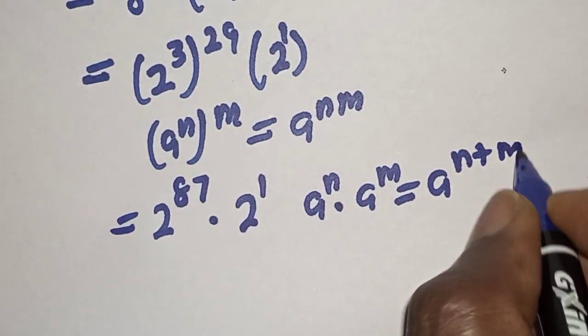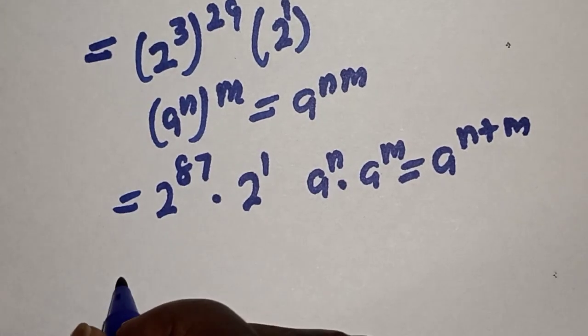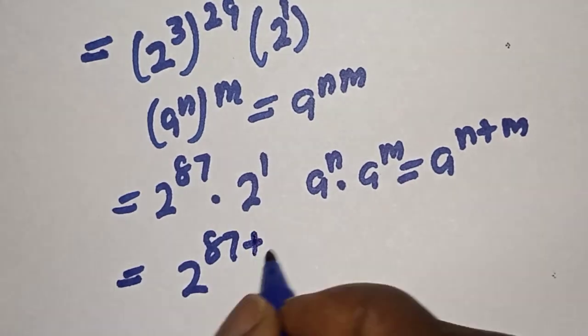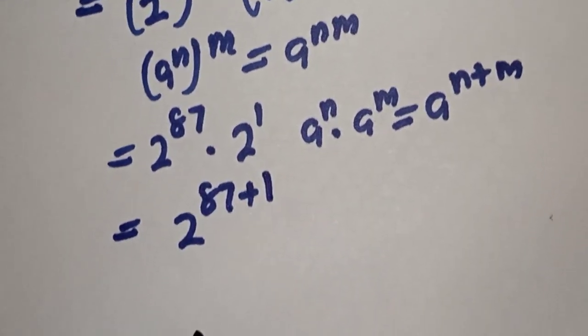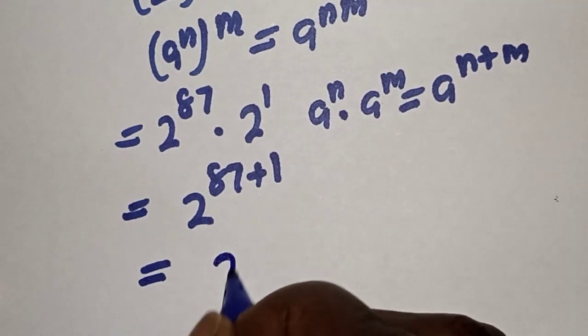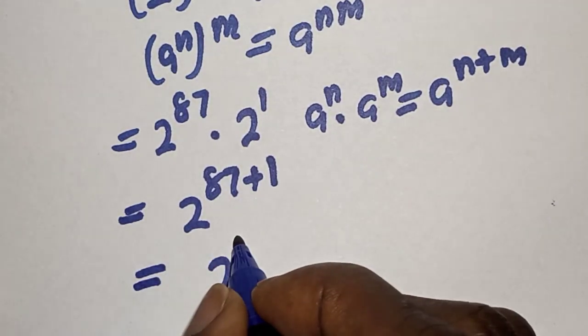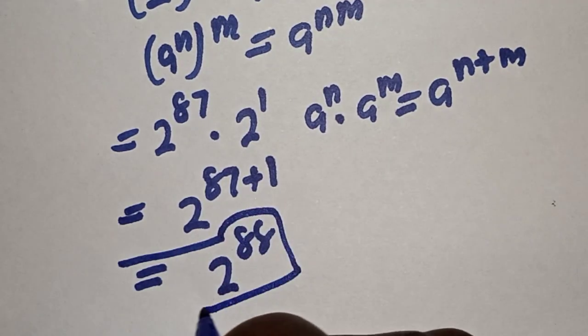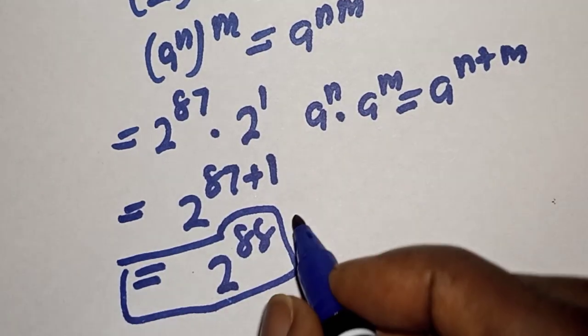So this is equal to 2 raised to power 87 plus 1. This is equal to 2 raised to power 87 plus 1, that is 88, and this is the final answer.